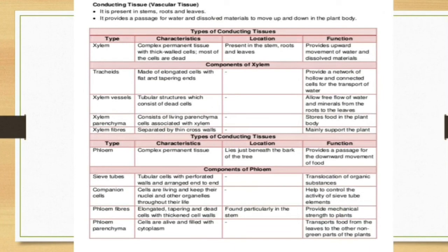An important difference between xylem and phloem: the transport of substances in xylem is unidirectional — only from bottom to top, from roots to the entire plant. Whereas in phloem, transport is bidirectional — always from source to sink. The source cell is the cell that produces food, and the sink is the cell that requires it for energy or a parenchymatous cell that stores food. When parenchyma becomes the source, this is why the movement is called bidirectional transport.